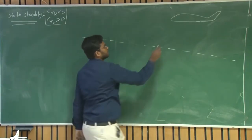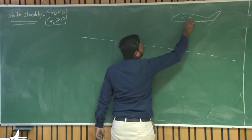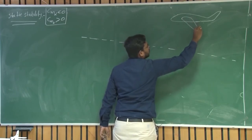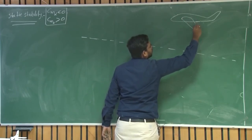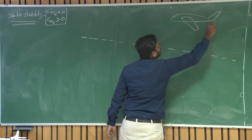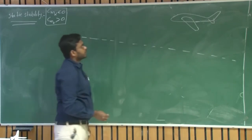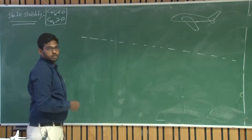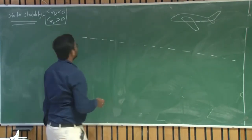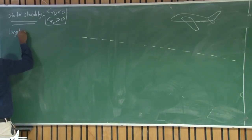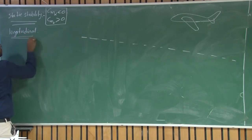Let us say this is your geometry. We have a UAV with a wing and tail. So when we are talking about longitudinal static stability, let us talk about the longitudinal condition.